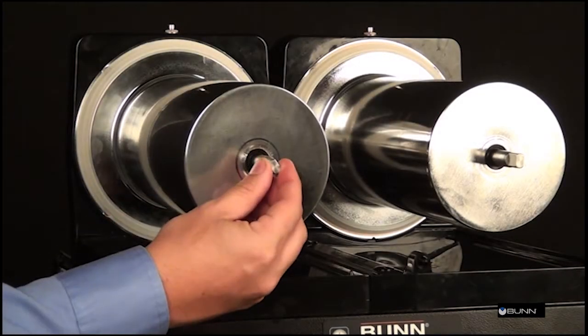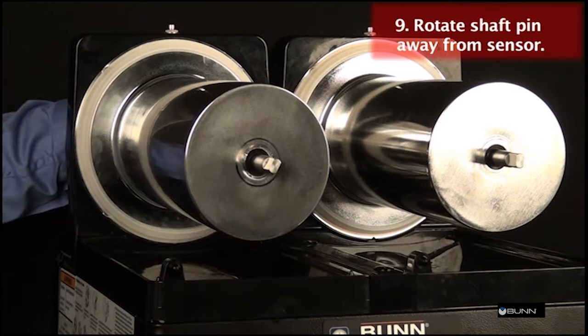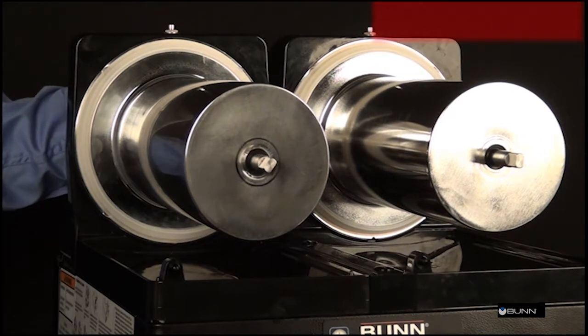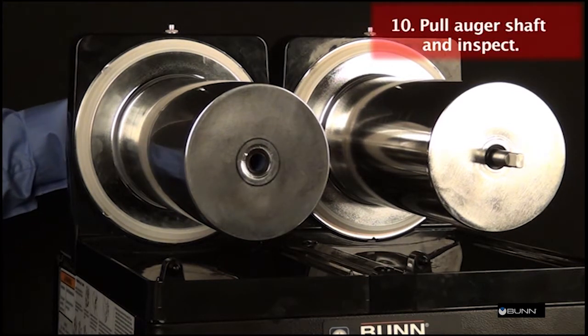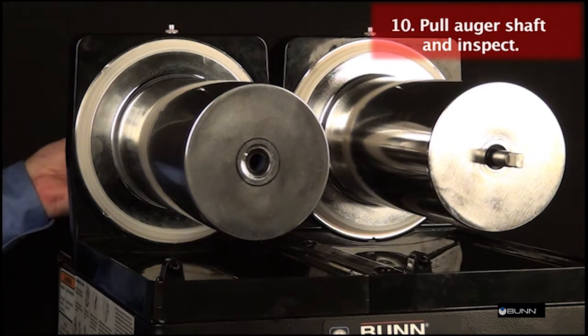By hand, rotate the motor shaft pin away from the torque board sensor. Pull the auger shaft assembly straight out of cooling drum. Inspect the shaft for abnormal wear.